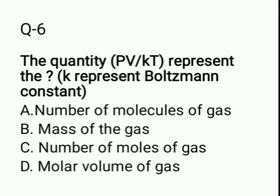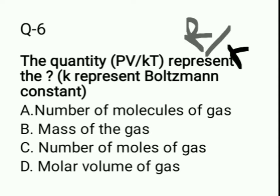Question 6: The quantity PV/kT represents — where k is the Boltzmann constant, equal to R (universal gas constant) divided by Avogadro's number. Options: A: number of molecules of gas; B: mass of the gas; C: number of moles of the gas; D: molar volume of the gas.